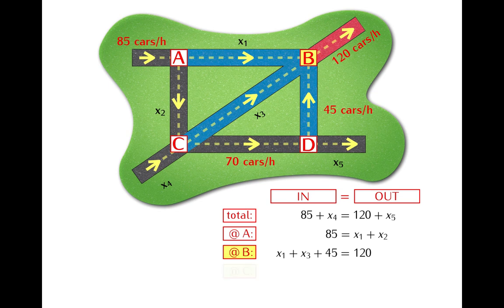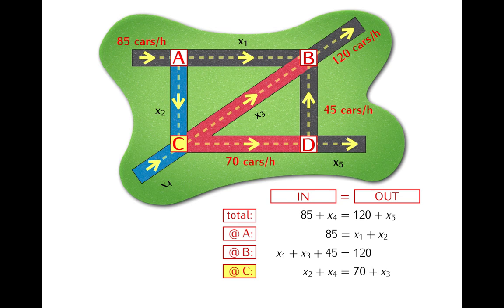Next at intersection C there are two streets going in and these streets bring x2 plus x4 cars per hour and there are two streets going out and these streets carry 70 plus x3 cars per hour.